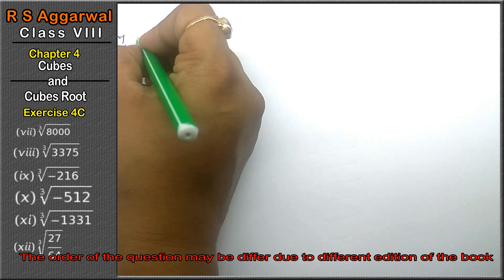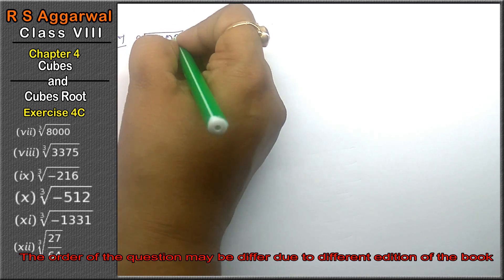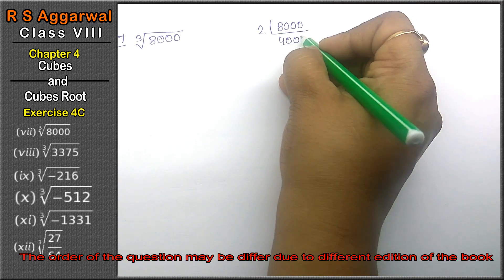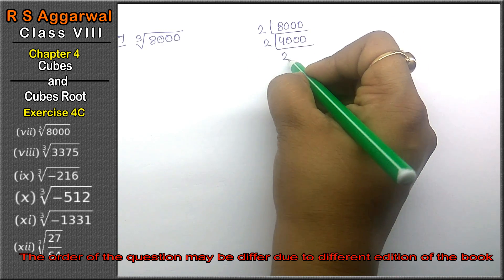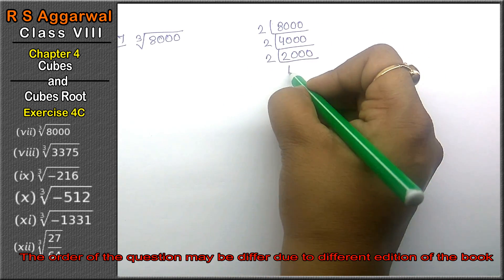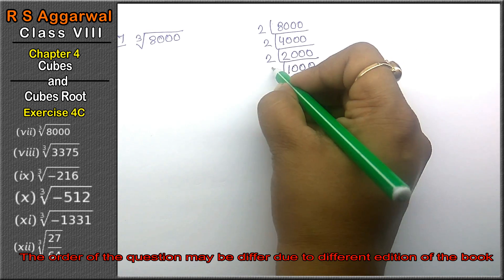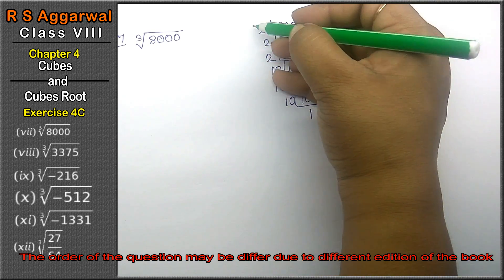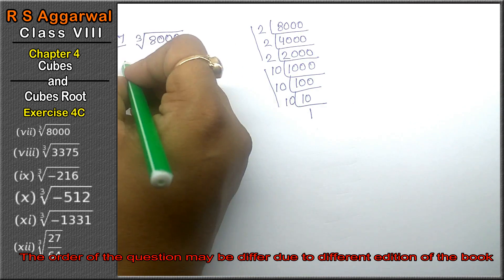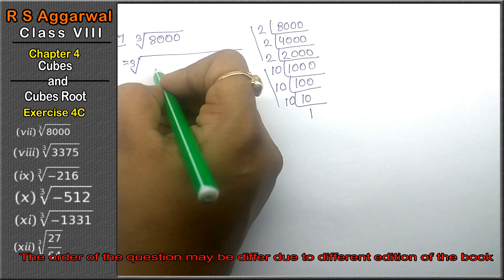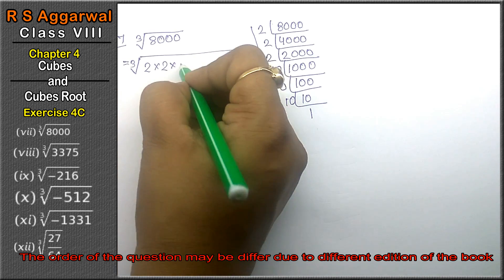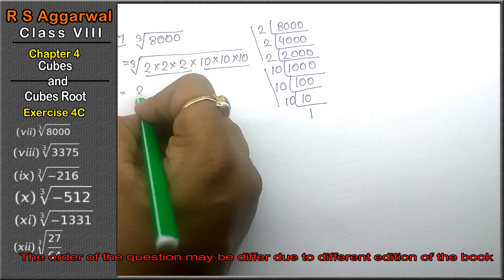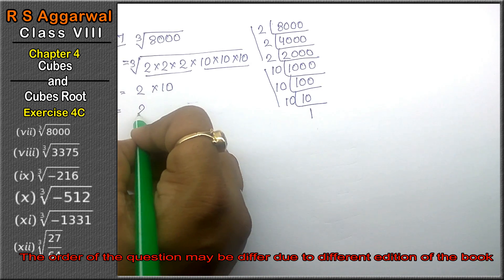Let's do question number 7 of Exercise 4C. Question number 7 is cube root of 8000. We do the prime factorization of 8000. 8000 = 8×1000 = 2³ × 10³ = 2×2×2×10×10×10. Making pairs of 3: one pair gives 2, another gives 10. So the answer is 2×10 = 20.